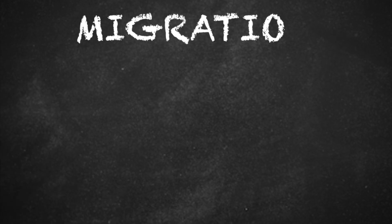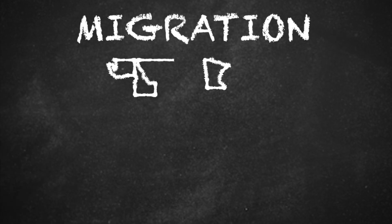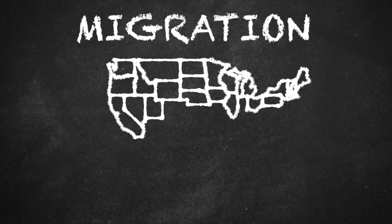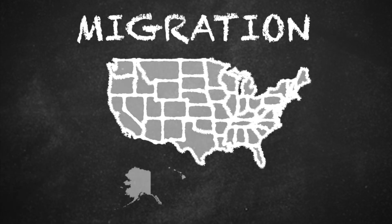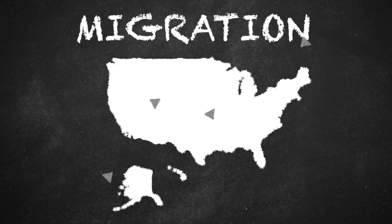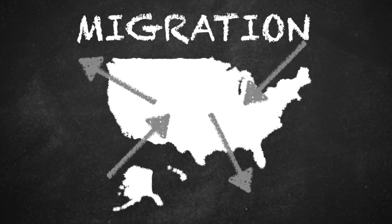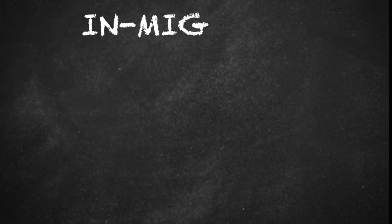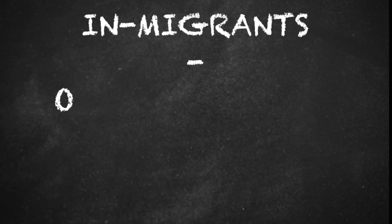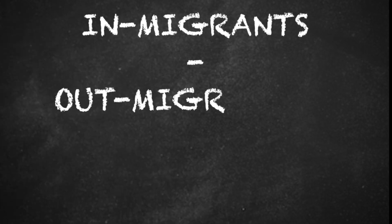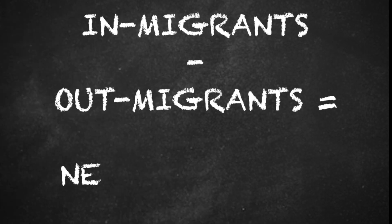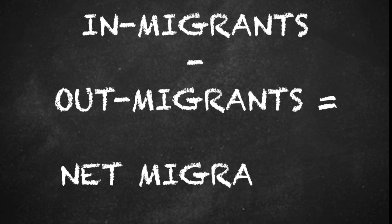The other way a population can grow is through migration. People move into the country from other parts of the world and out of the US to other countries. Taking the difference between in-migrants and out-migrants produces a measure that demographers call net migration.